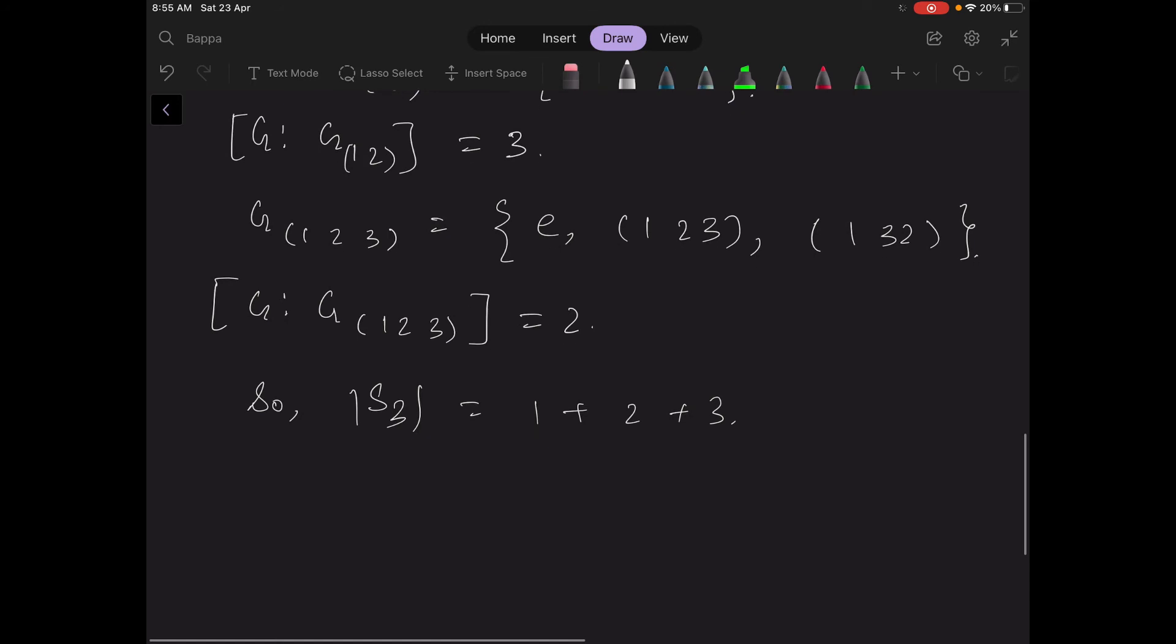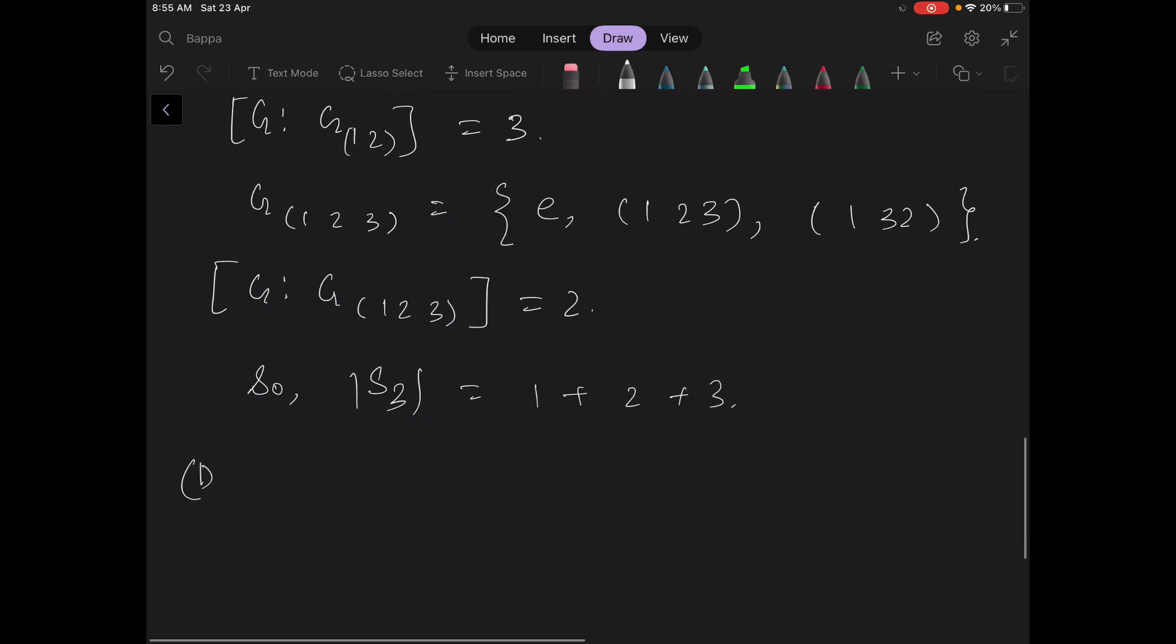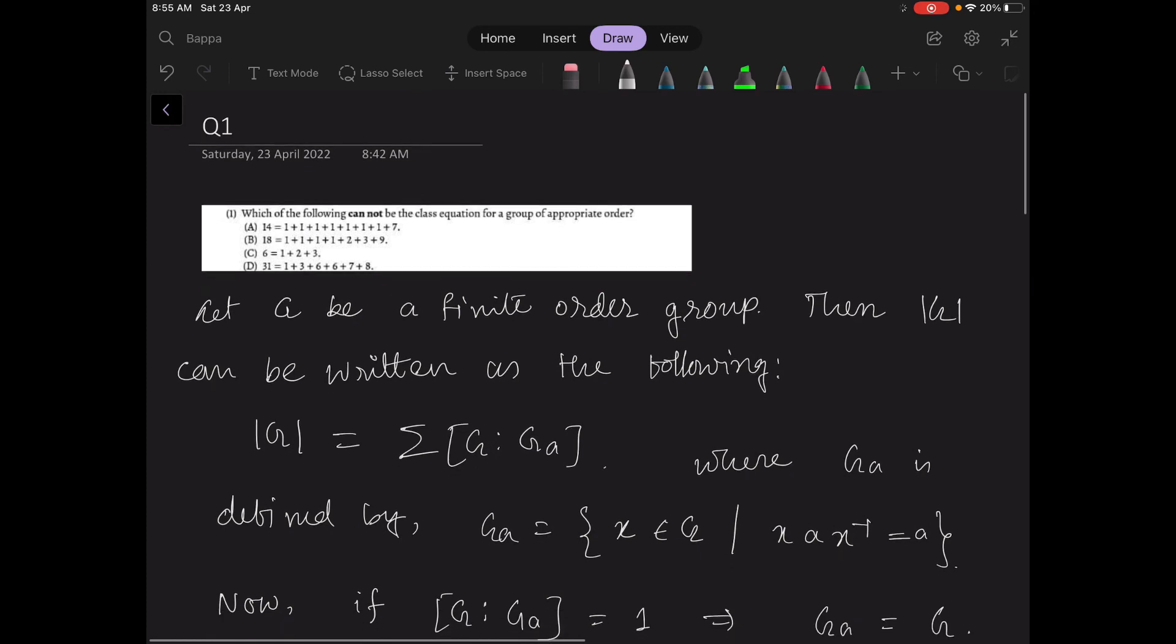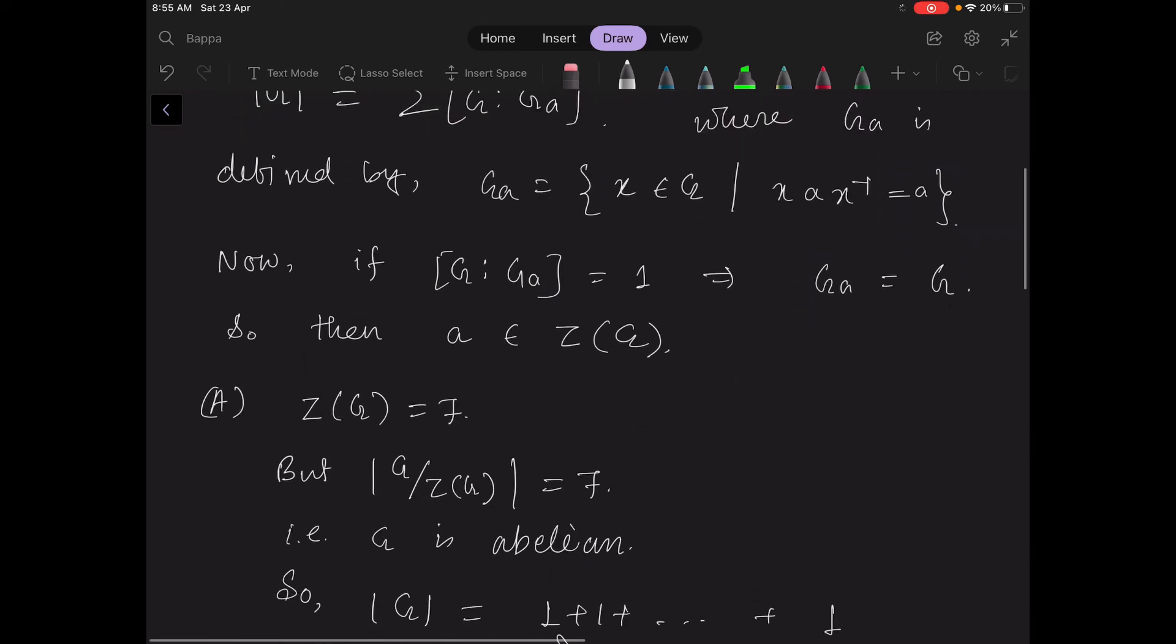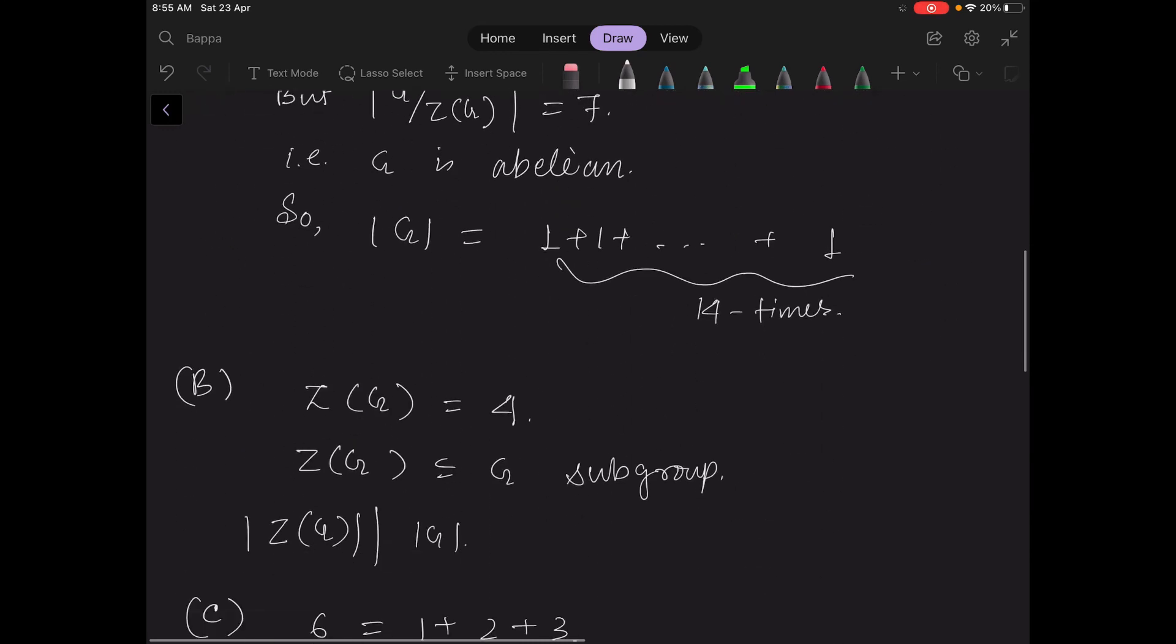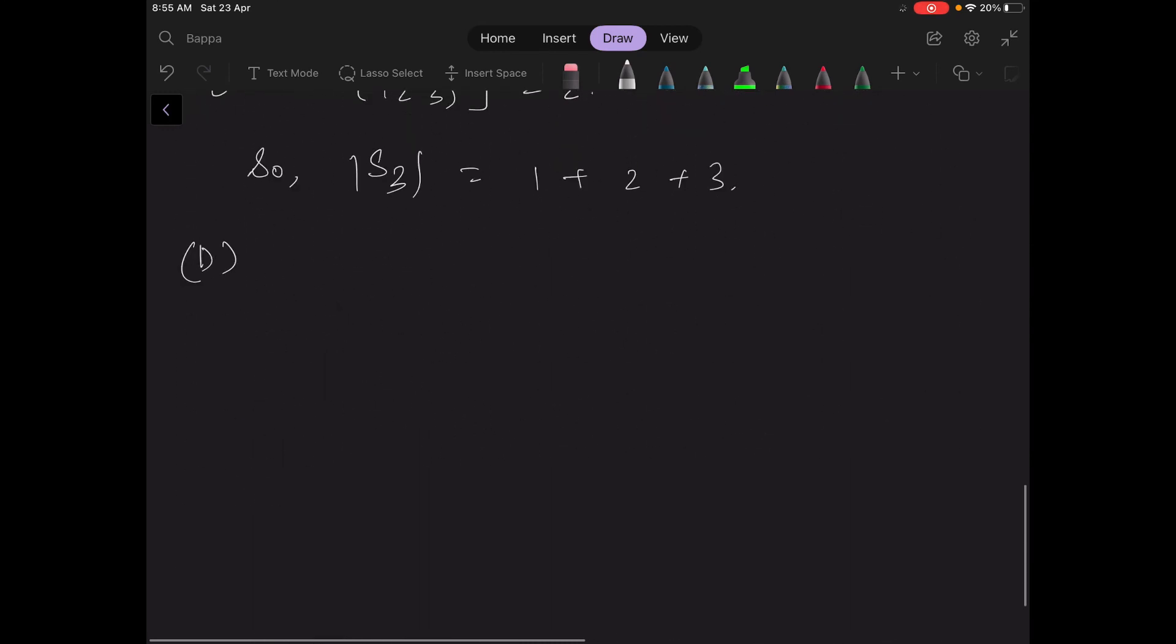And now let us look at option D, which says 31 equal to 1 plus 3 plus 6 plus 6 plus 7 plus 8. So another fact is that if you look at [G:G_a], the cosets of G_a inside G...